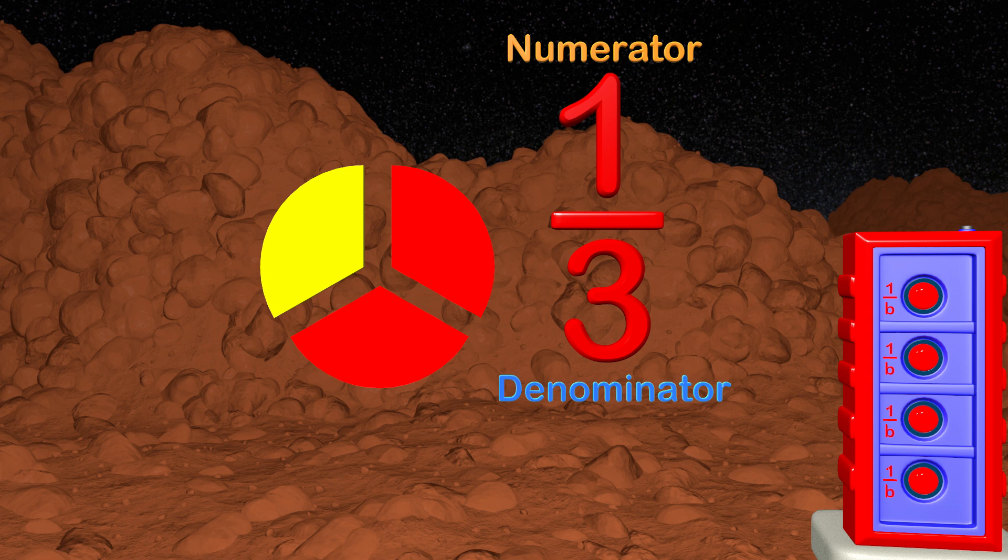The denominator is the number on the bottom that shows all the parts in the entire circle. Because the entire circle is made of 3 parts, the denominator is 3. This fraction is 1 over 3 also called 1 third.